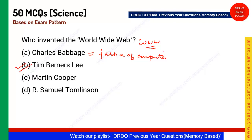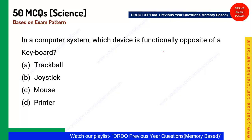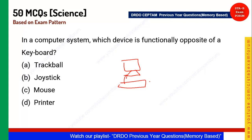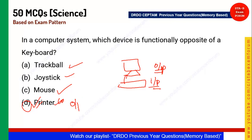Next question: In a computer system, which device is functionally opposite to a keyboard? A keyboard is an input device. The question asks for the opposite — an output device. Among the options, trackball and joystick are also input devices. Printer is an output device, so option D is the correct answer.